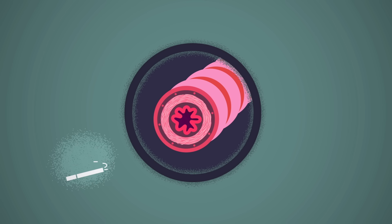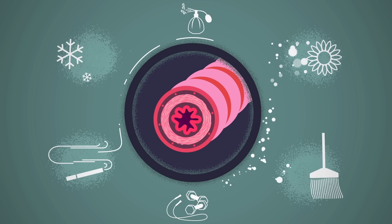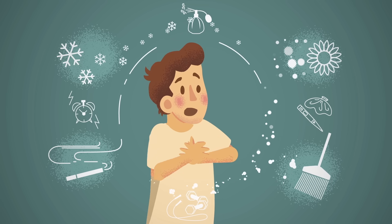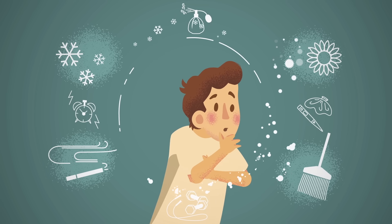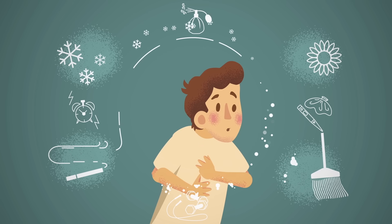Some of the many asthma triggers include tobacco smoke, pollen, dust, fragrances, exercise, cold weather, stress, and even the common cold. When people with asthma are exposed to these triggers, an asthma attack or exacerbation can occur.